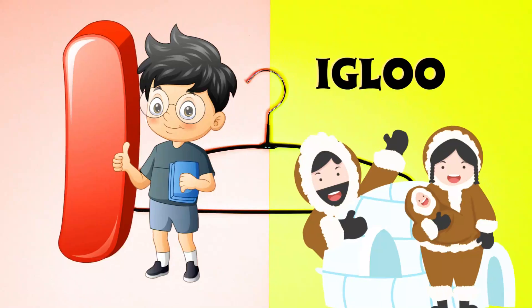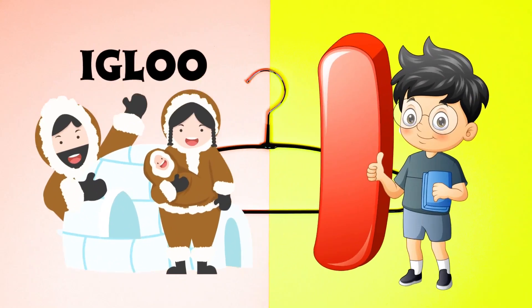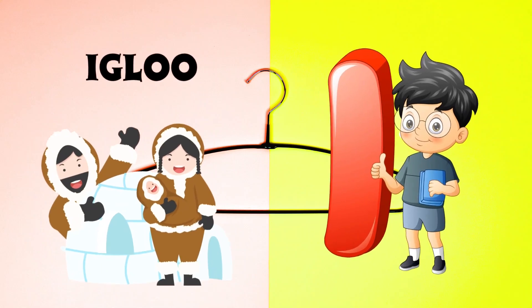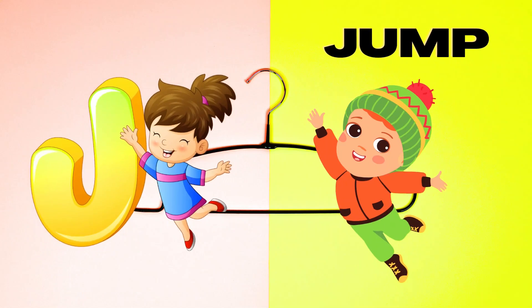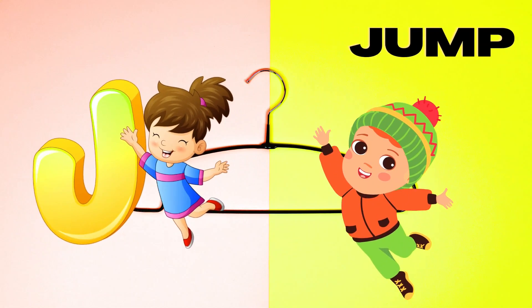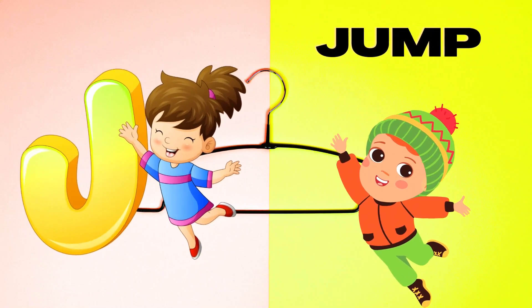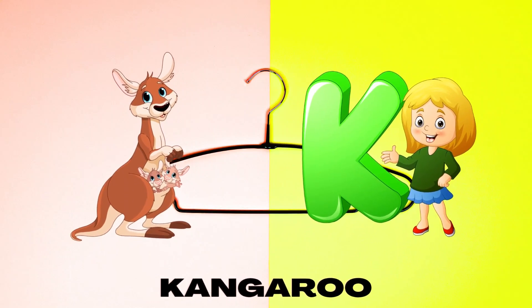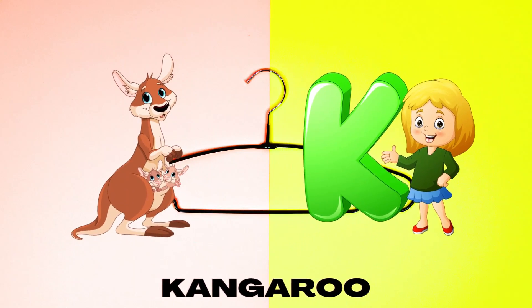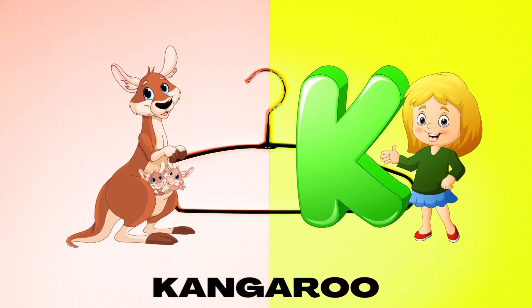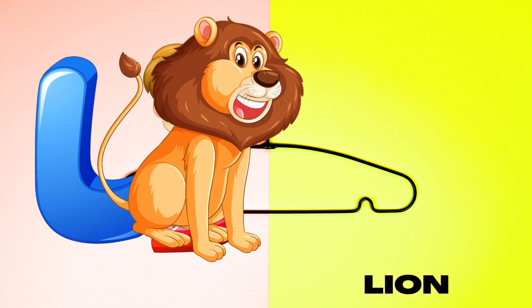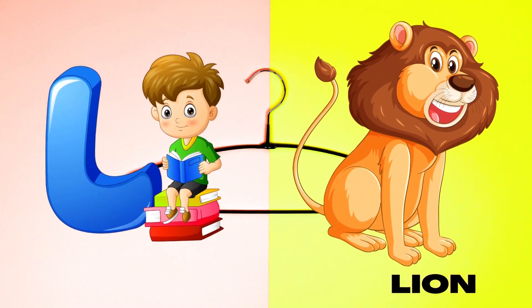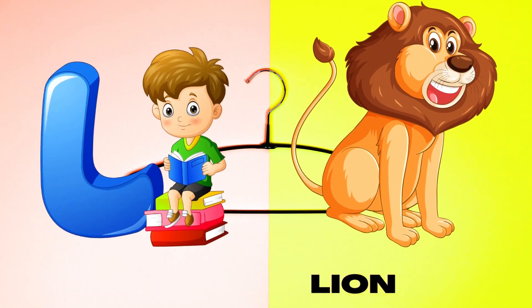I is for Igloo, I-I-Igloo. J is for Jump, J-J-Jump. K is for Kangaroo, K-K-Kangaroo. L is for Lion, L-L-Lion.